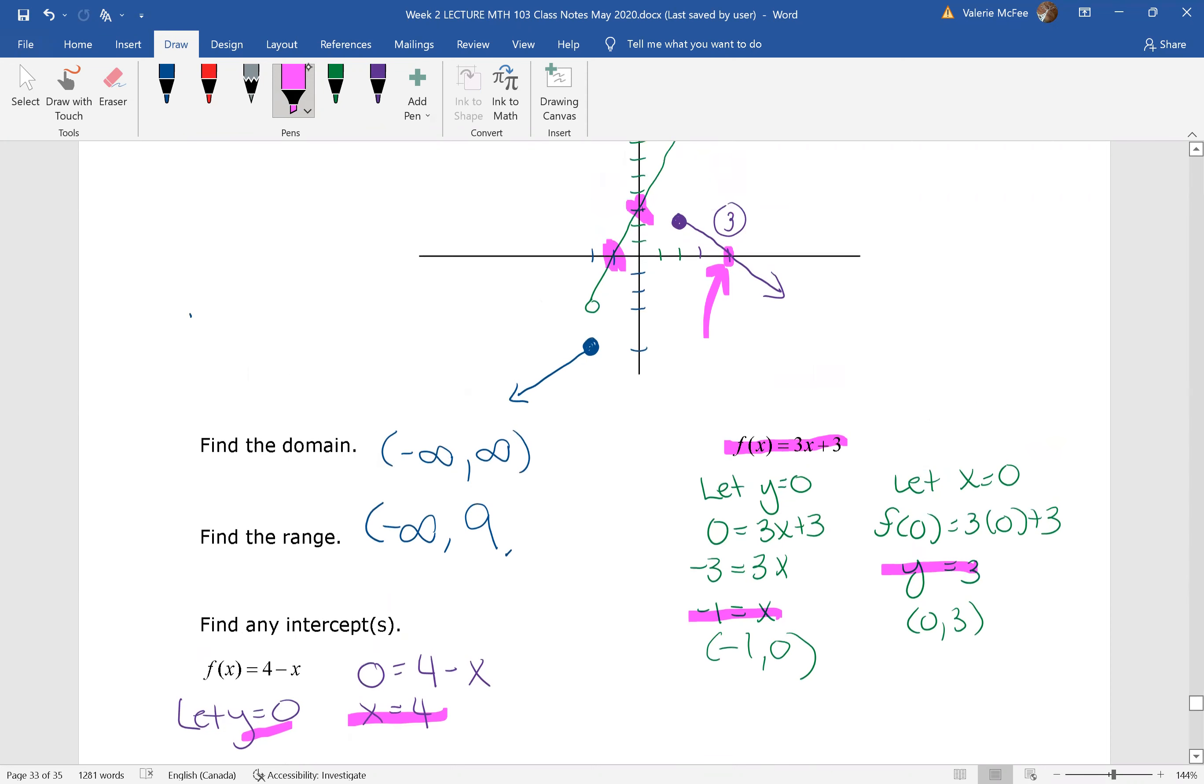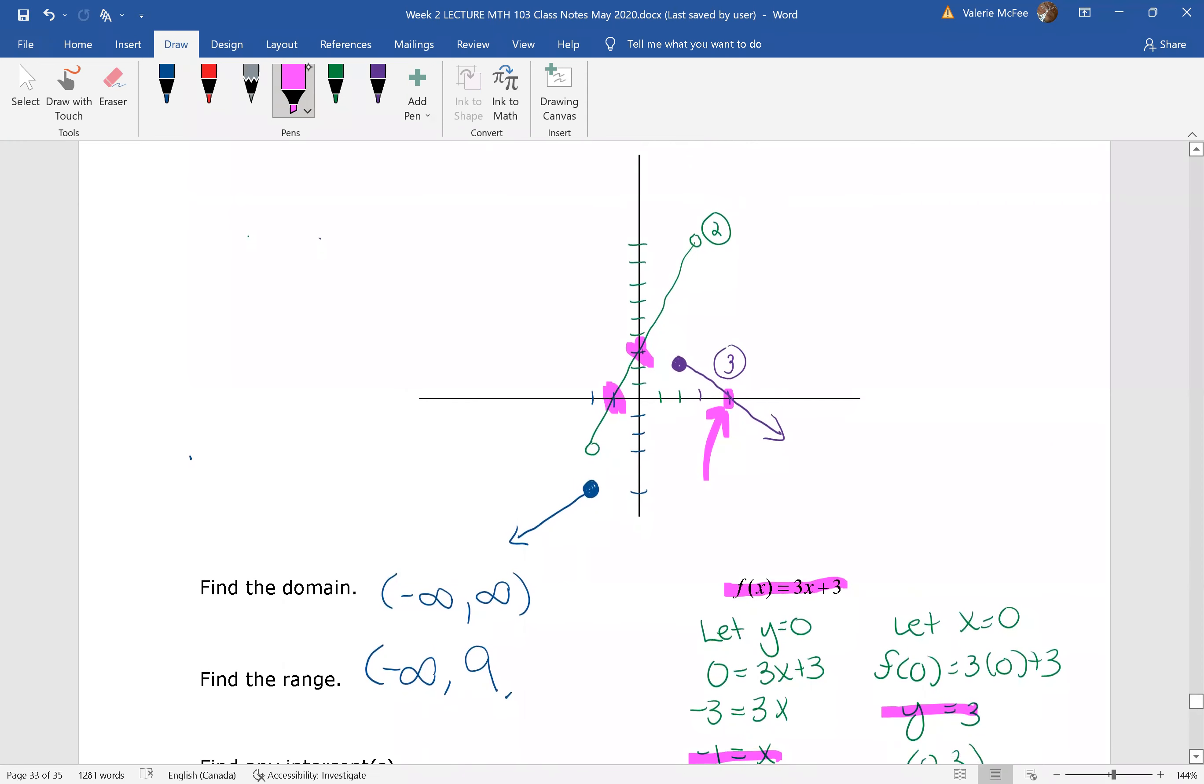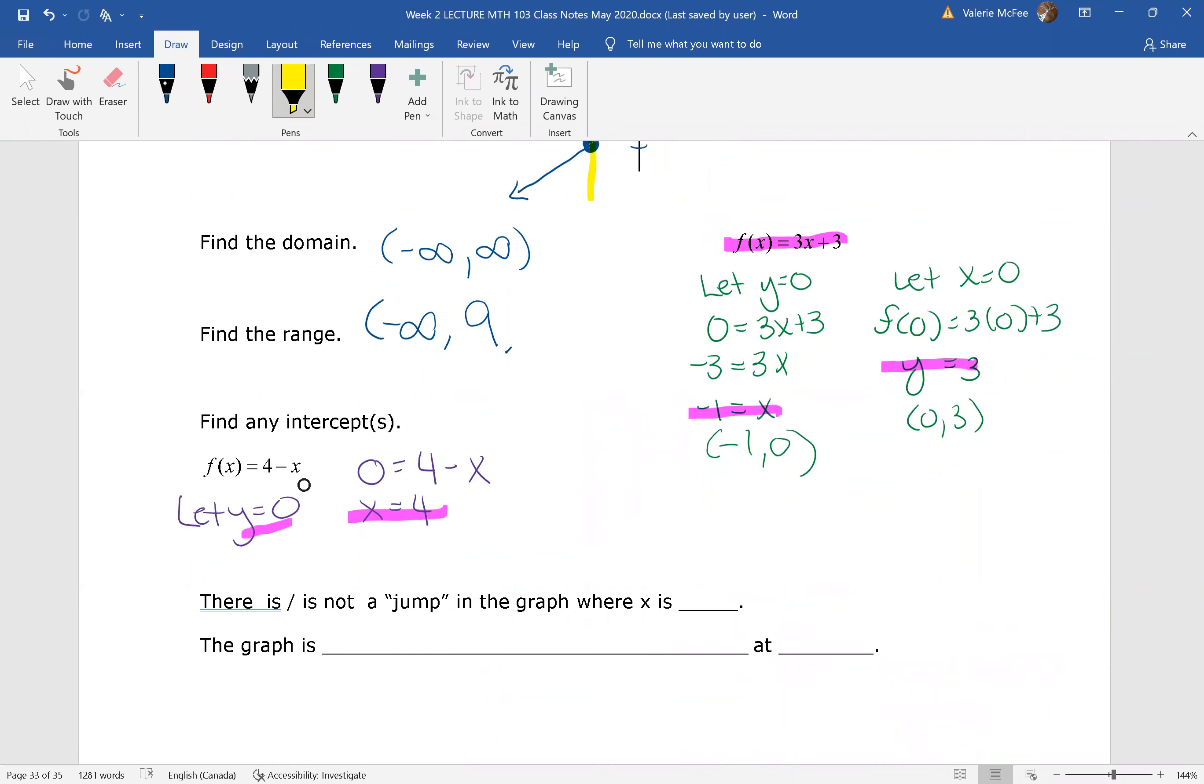Now, when we look at this graph, we see that there are two jumps. We have jumps here where x is negative two, and we have a jump here where x is positive two. So there is a jump where x is two and negative two. This graph is discontinuous.